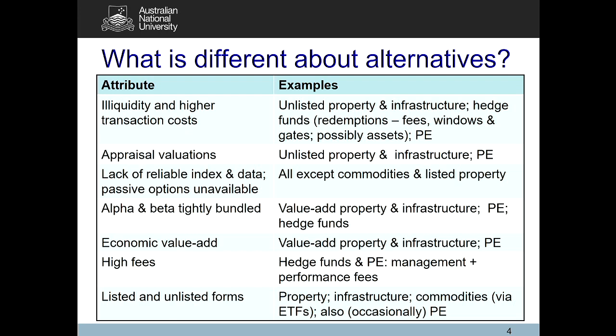Once you find it hard to split alpha and beta, it's very hard to figure out the return due to risk versus the return due to skill. In private equity, most performance measures — like return on invested capital, internal rate of return, j-curves — don't adjust for risk at all. So far, all of these are issues or challenges with alternative investments.